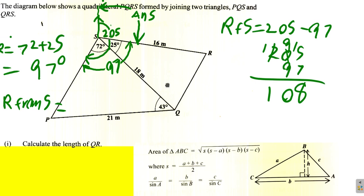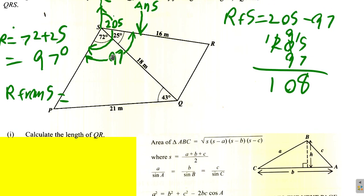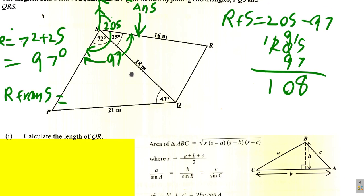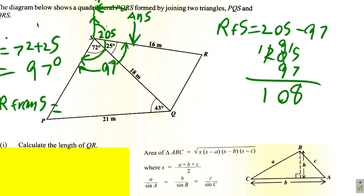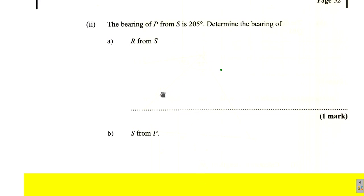So the angle there is 108 degrees. The answer for the bearing of R from S is 108 degrees. Of course you would do the calculation on the diagram page — we're just doing the calculation here. Now for S from P.